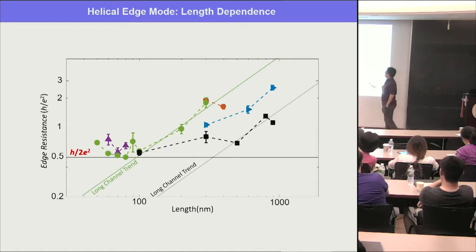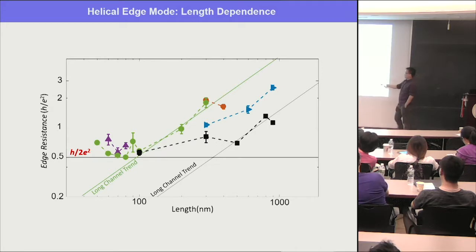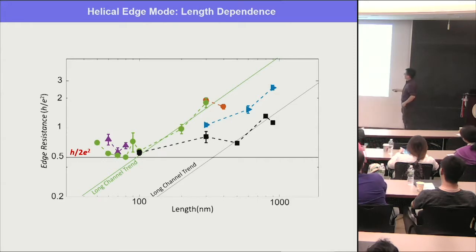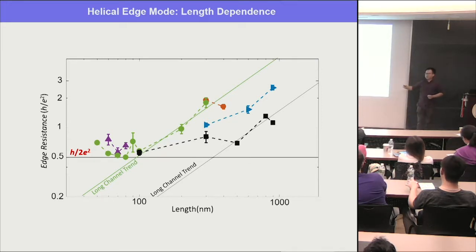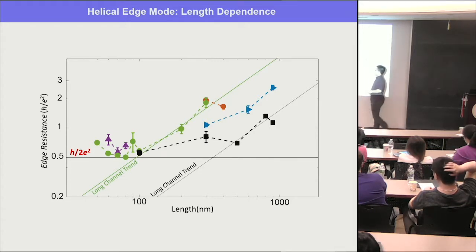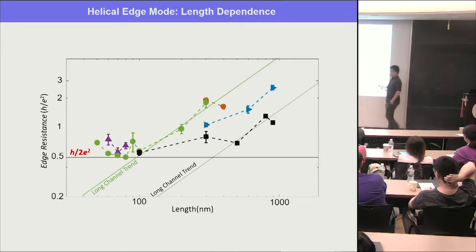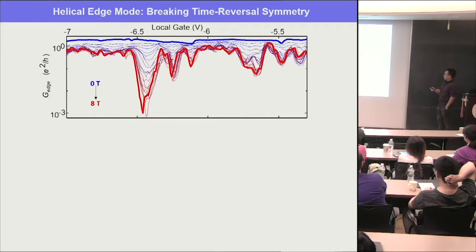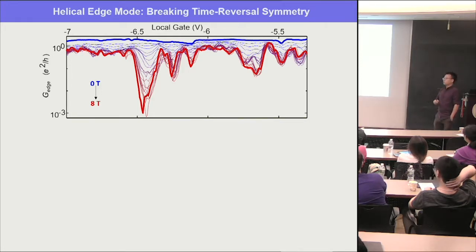In the length-dependence study, different colors represent different devices, each with multiple local gates of different widths. Increasing channel length, the edge resistance increases and eventually becomes ohmic — linear in L. But reducing length to very short, it saturates and never goes below h/2e² for two edges, entering the ballistic regime. This demonstrates the quantized conductance is not accidental.